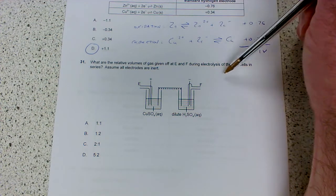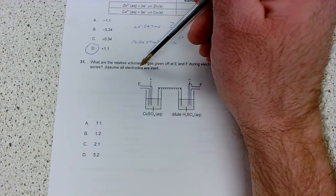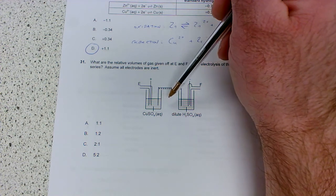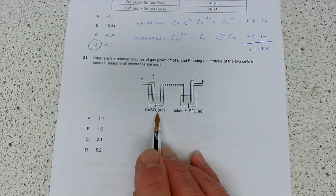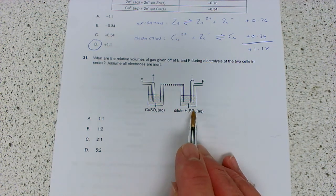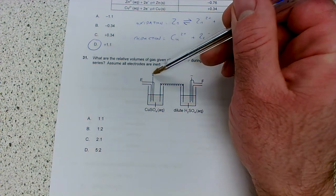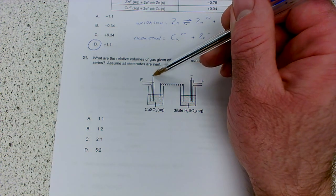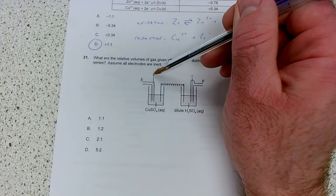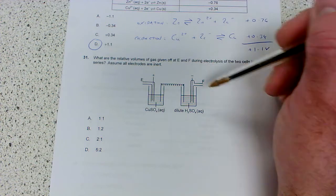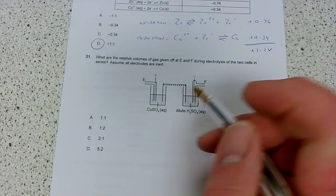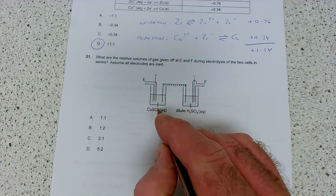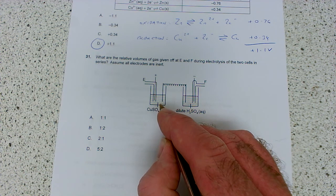What are the relative volumes of gas given off at E and F during electrolysis of the two cells in series? Assume all electrodes are inert, so graphite electrodes or platinum. We've got copper sulfate solution here, sulfuric acid, the positive anode and negative cathode.